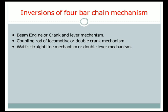Now, inversions of the 4-bar chain mechanism. Inversion means by fixing any link we can get different types of mechanisms. In this 4-bar chain mechanism we have 3 inversions. The first one is the beam engine or crank-lever mechanism. The second one is the coupling rod of a locomotive or double crank mechanism. And the last inversion is the Watt straight line mechanism or double lever mechanism. We shall see these inversions in detail.